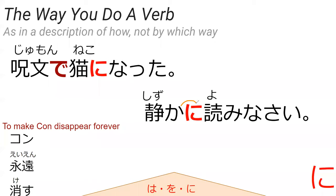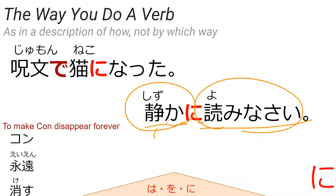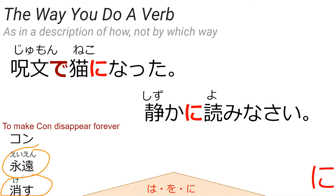に in Japanese is basically a way to turn nouns into adverbs — it describes the way you do a verb. For example, 静かに読みなさい means 'read it quietly.' Quiet became quietly because we're describing how we're doing the verb. So when you add 永遠 to 消す, it means to erase it foreverly — it disappears and you will never see it again.